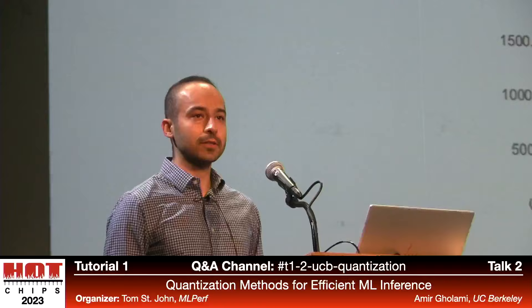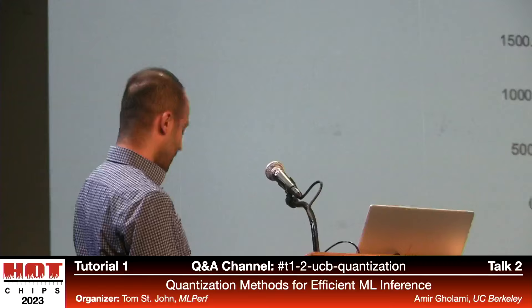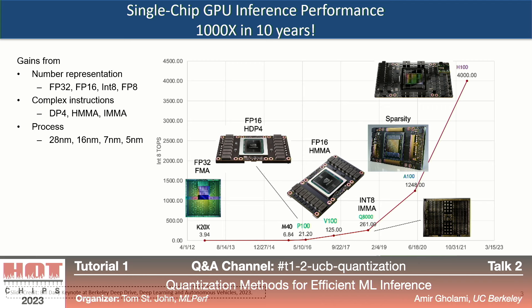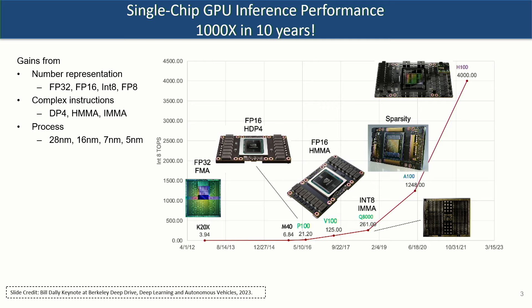If you look at the past 10 years, there's a very interesting trend in hardware. This slide, borrowed from Professor Bill Daly, shows years starting from 2012 with Kepler GPUs through today's H100. Over the past 10 years, there's been a 1000x increase in peak theoretical compute available with this hardware. Part of that is made possible with reduced precision — going from FP32, mostly used for scientific computing, down to FP8, and now people are even trying FP4.